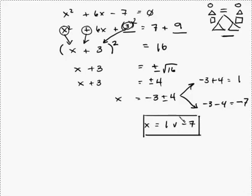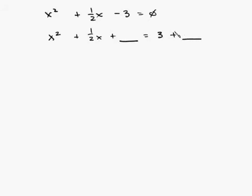Let's do another problem. How about x squared plus 1 half x minus 3 equals 0. Let's copy down our x squared plus 1 half x plus blank equals 3 plus blank. All I did is I moved the 3 over.